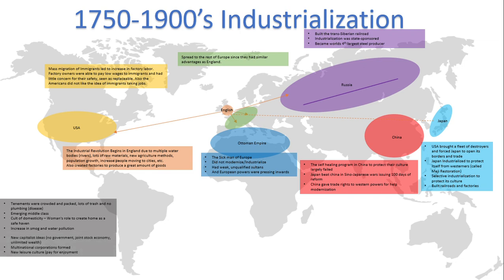New capitalist ideas formed, such as no government intervention. The joint-stock economy allowed companies where people can willingly invest. They also had limited liability, meaning investors do not share in the company's debts — they only share in profits and can only lose the amount of money they have invested. Finally, multinational corporations formed, spanning multiple nations and allowing them to make large amounts of money.